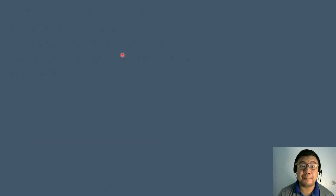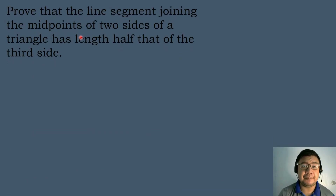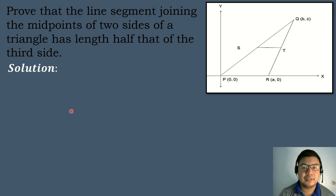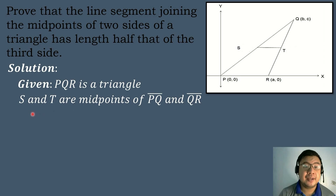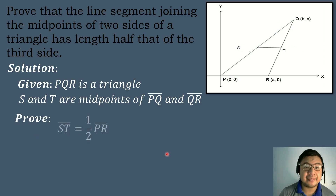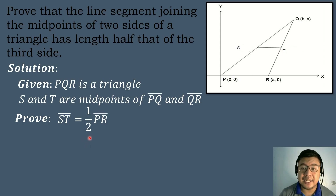Let's have our next example. We have to prove that the line segment joining the midpoints of two sides of a triangle has a length which is half that of the third side. Let's list down the given: triangle PQR, with point S and point T as the midpoints of segment PQ and segment QR. We must prove that segment ST is equal to one half the measure of segment PR.